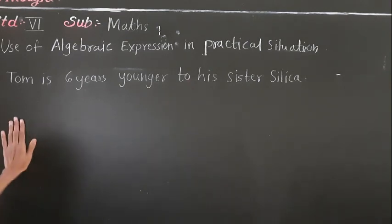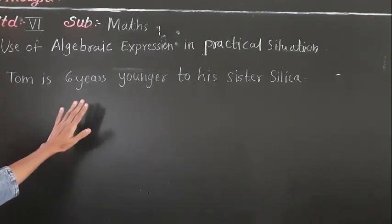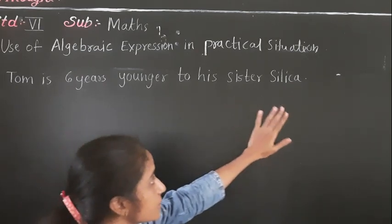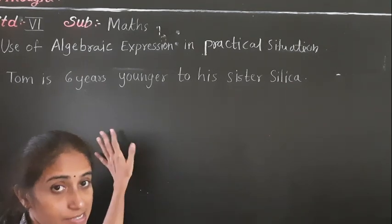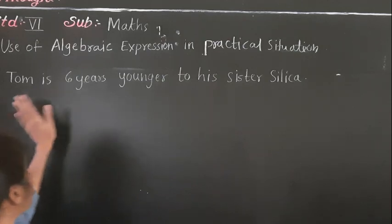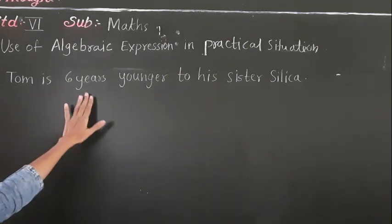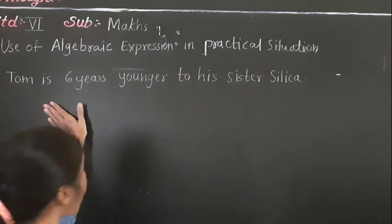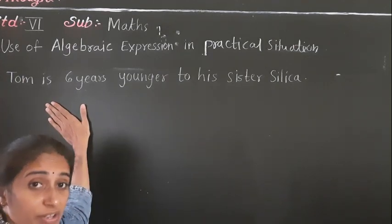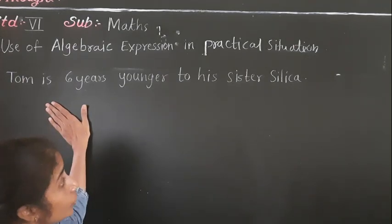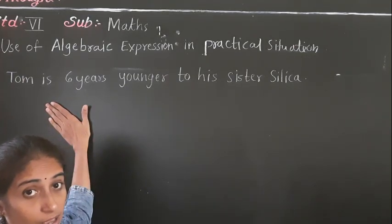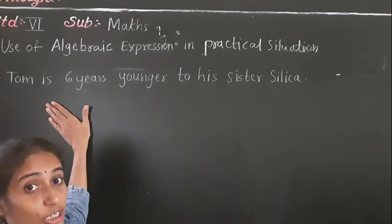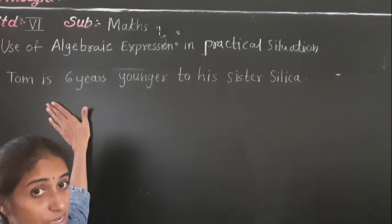So now the example is here. Tom is 6 years younger to his sister Sirika. This is a real life example. So we should know first the age of his sister.